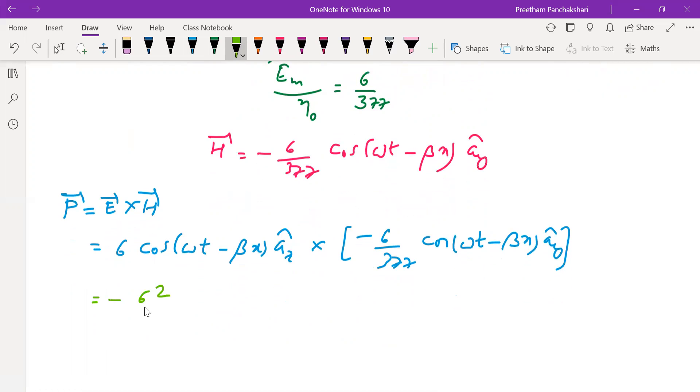Minus 6 squared over 377 cos²(ωt - βx). â_z cross â_y is minus â_x. So finally minus into minus becomes plus. 36/377, which will directly give the answer for this.